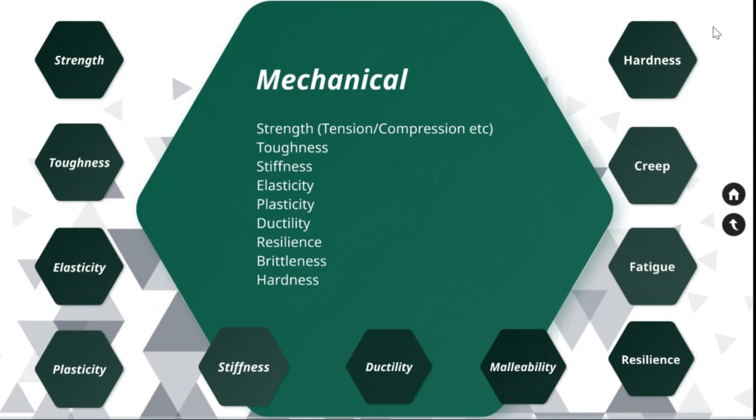Mechanical properties of material are strength, toughness, elasticity, plasticity, stiffness, ductility, malleability, hardness, creep, fatigue, resilience, etc. Let us dig into more details.